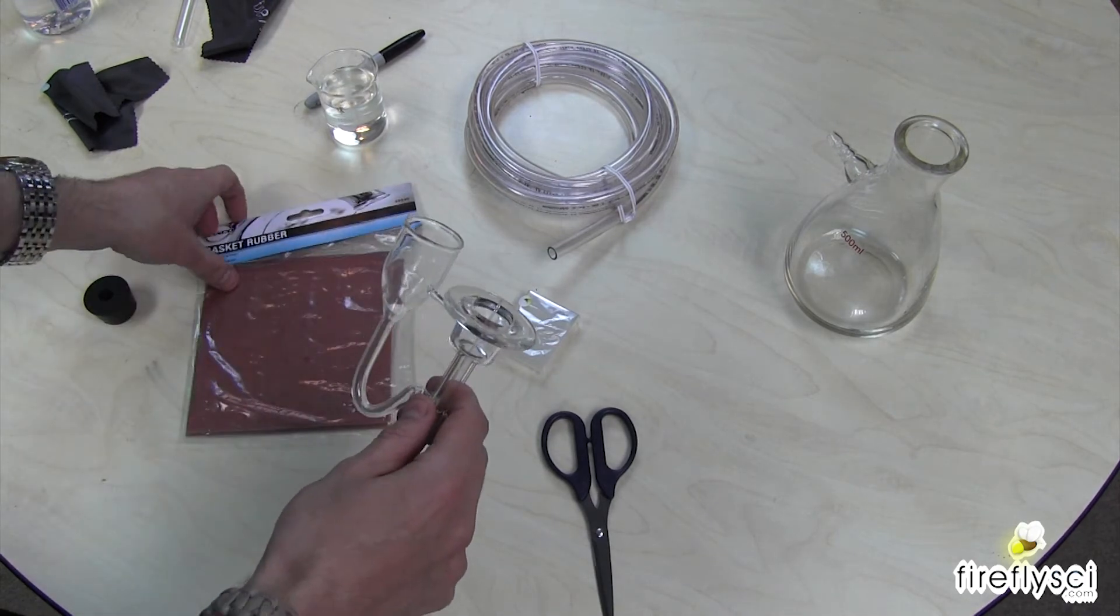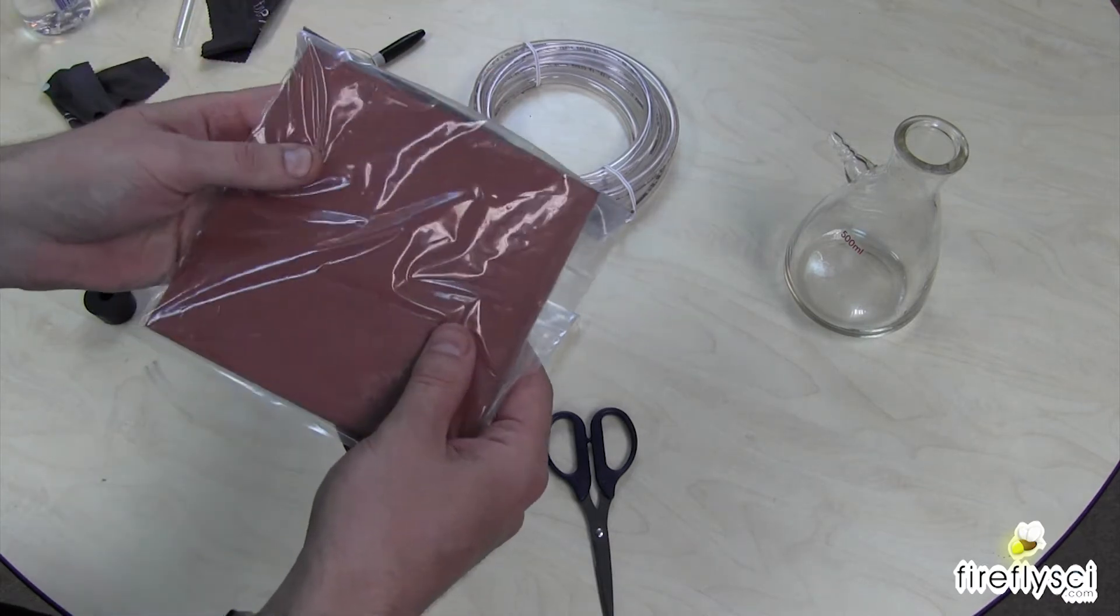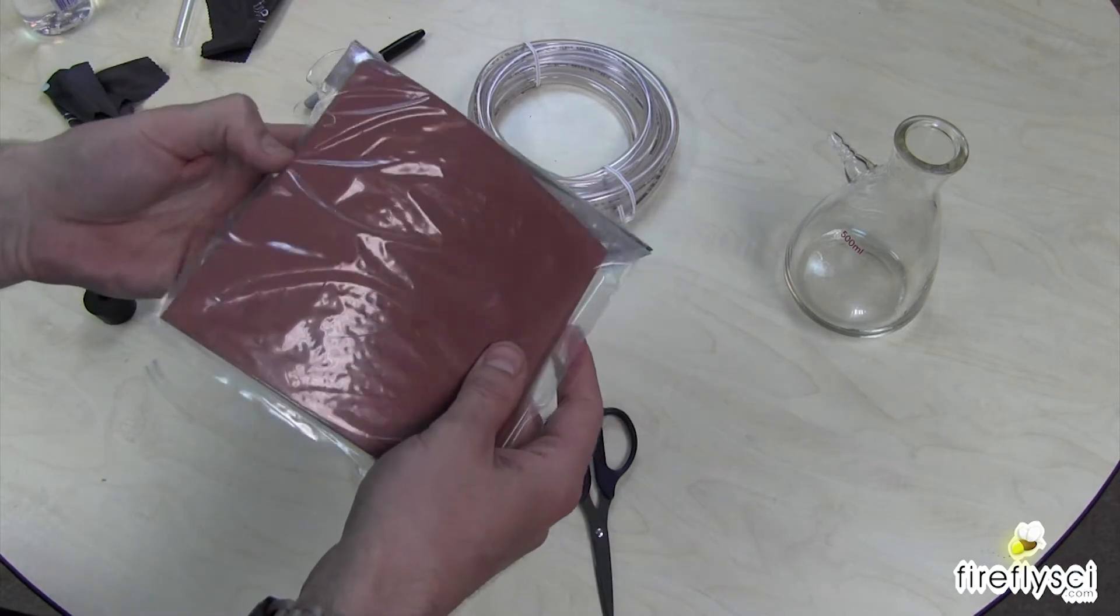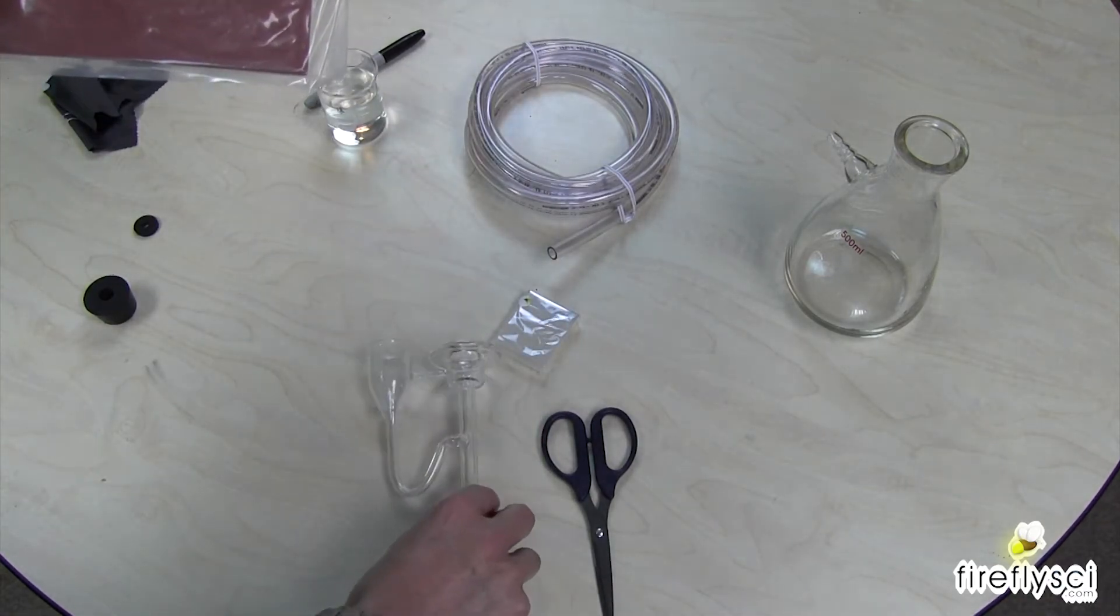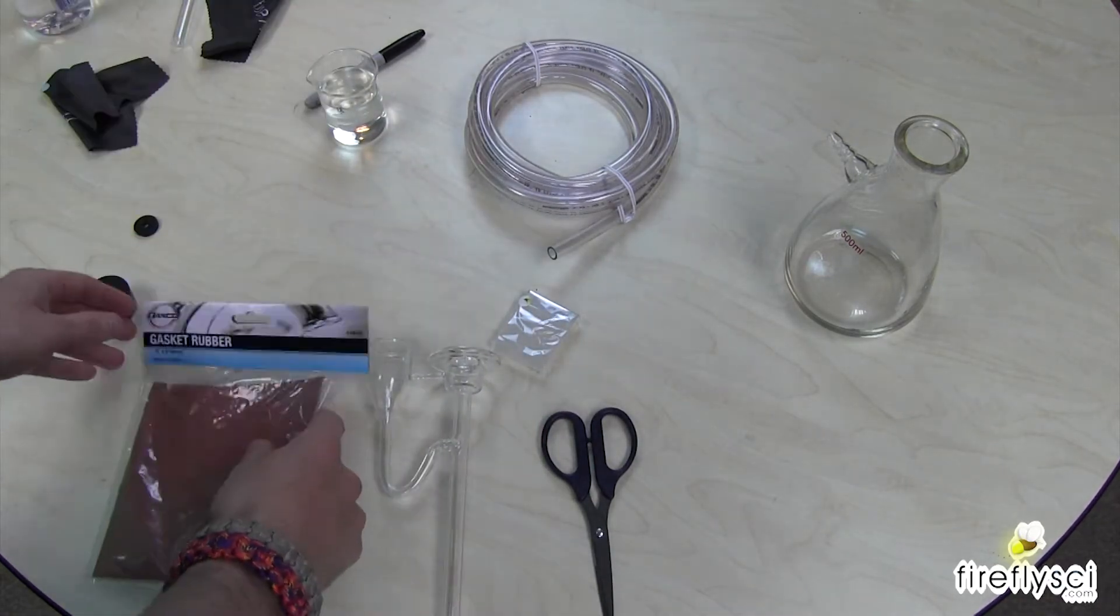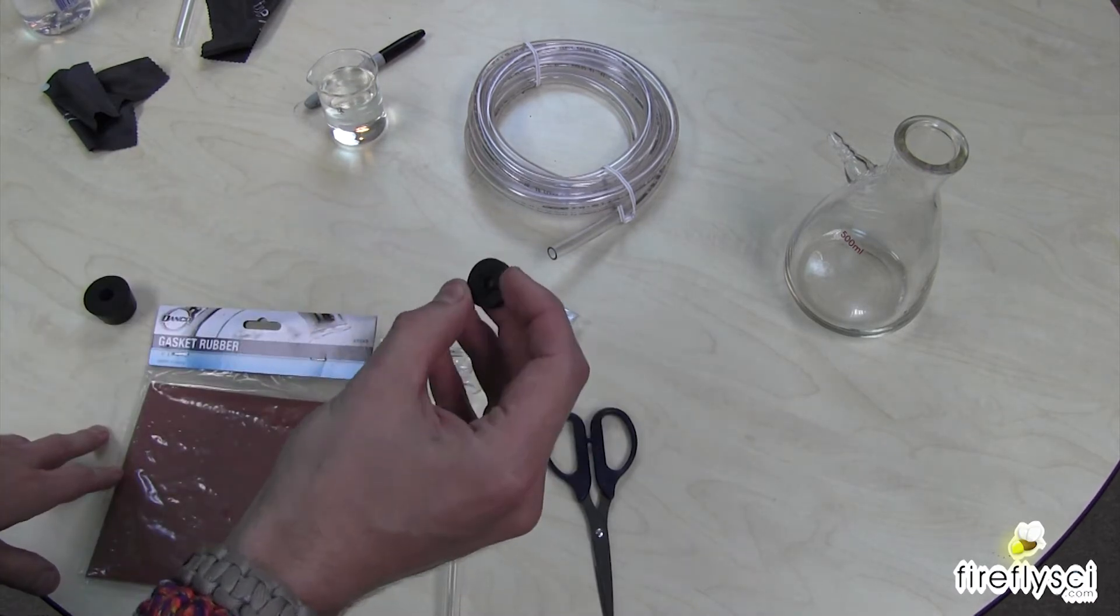I didn't look for a gasket for this yet. But I was at Home Depot this morning, and I picked up this big sheet of rubber here. So I'm just going to cut this into a nice round shape. That's going to fit right on the top of this here.